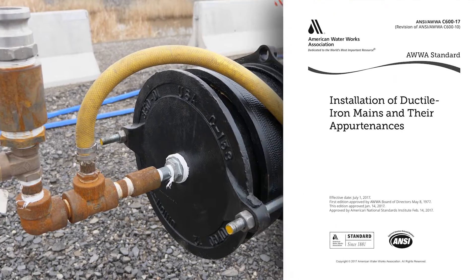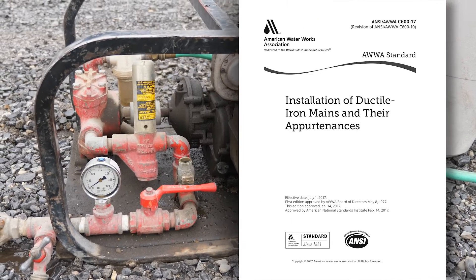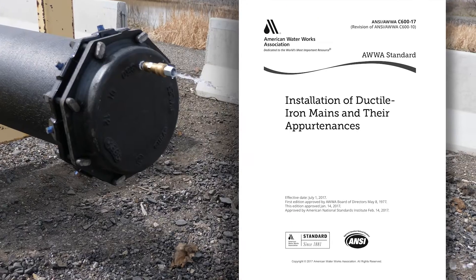AWWA C600 is a guide for installing ductile iron pipe into existing distribution systems and for preparing documents for developing new systems or extensions. A detailed description of the process for hydrostatic testing a new installation is also provided. This test confirms the watertightness of a new line or can offer clues to diagnosing problems after installation.